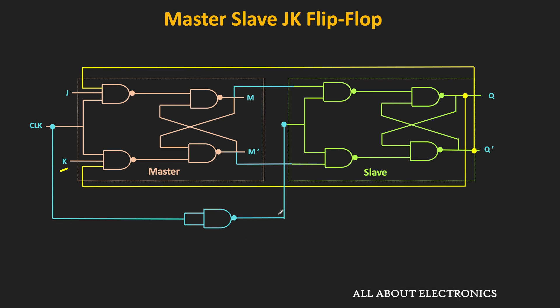Now let us see the working of this JK Flip Flop. Using a couple of input sequences, we will understand how the master latch acts as a JK latch and how the slave latch follows the master output. We will also see this using a timing diagram, and we will see how the flip flop avoids the race-around condition when both J and K inputs are 1.